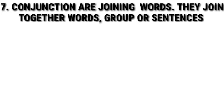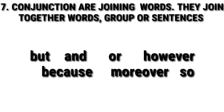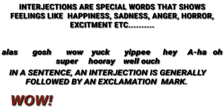Number seven: conjunctions are joining words. They join together words or groups of sentences. For example: but, and, or, however, because, moreover, so.